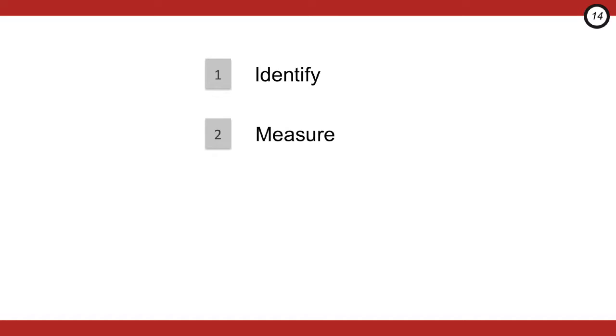This brings us to the end of alcohol withdrawal — let's review the four steps. Identify alcohol withdrawal, remembering that the tremor is important. Use the CIWA score to measure the severity. Use that score to guide your treatment and make sure they're fully treated before leaving the ED. Lastly, we can make a difference in these patients' lives — provide them with support. We can dramatically change the view of alcohol use disorders so that it's not just an episodic annoyance, but understood as a serious long-term condition in which you can have an important role. Thanks everyone for listening.